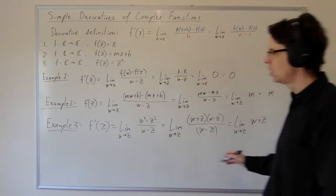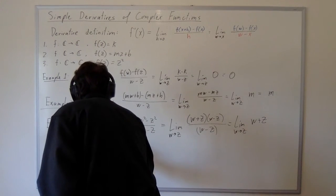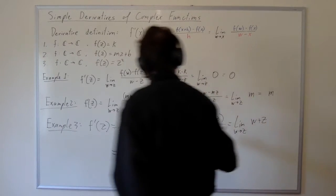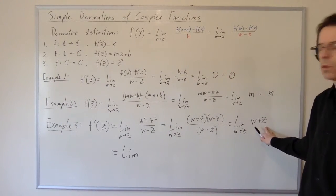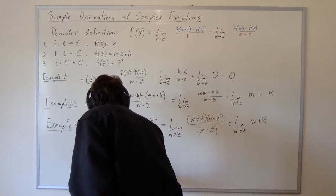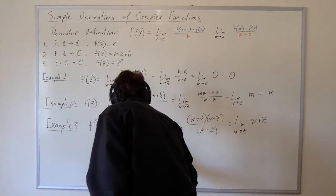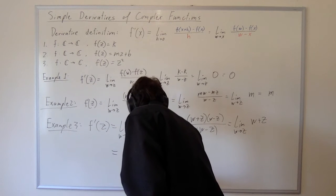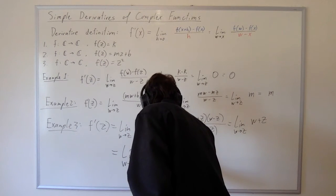And unless you're watching the videos out of order, we haven't proven the sum law for limits, and so you should question this for now. So here I'm going to split this limit. This is the limit as w approaches z of w plus the limit as w approaches z of z.